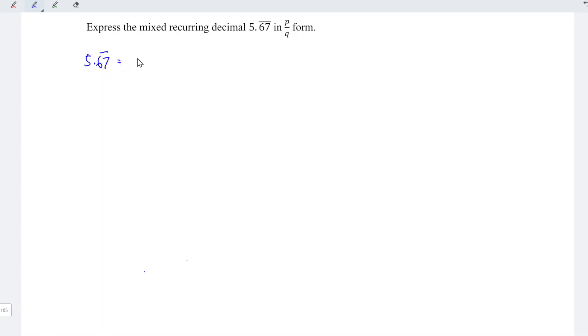We can split this in the form of non-repeating plus repeating. We have 0.676767... and this can be written as 5 plus 0.67 plus 0.0067 plus 0.000067 and so on.